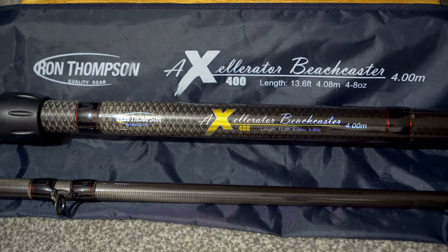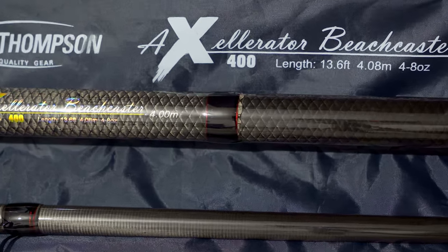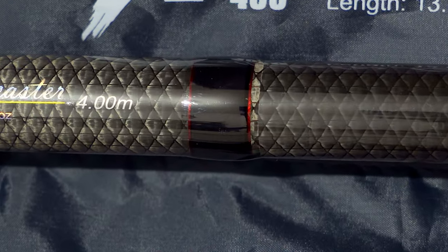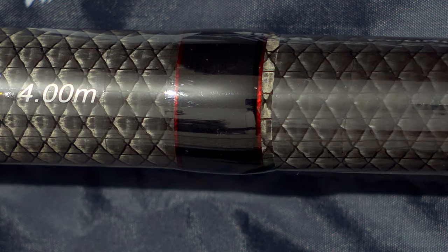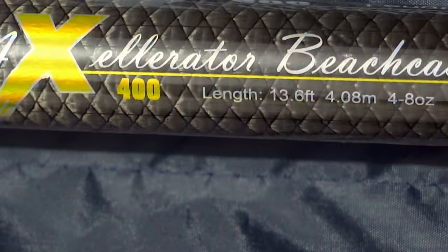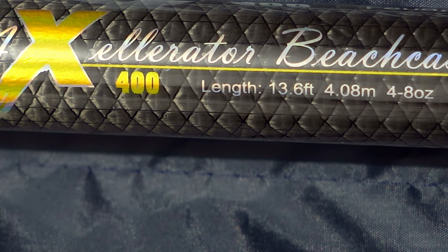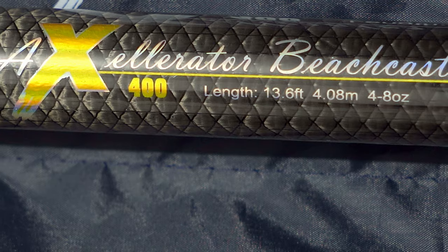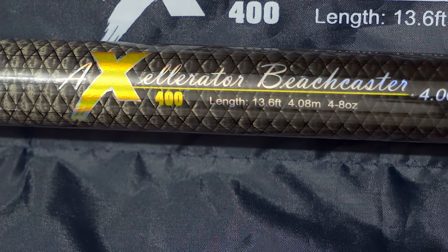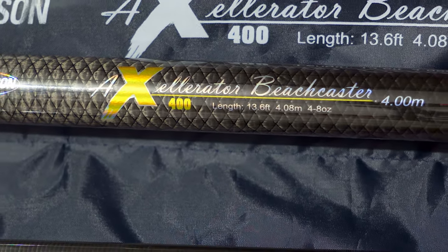I like the general look of this rod, especially with the carbon fiber fish scale motif and the black and red metallic whippings. This is rated to cast 4 to 8 ounces and is 13.6 feet or 4.08 meters long.